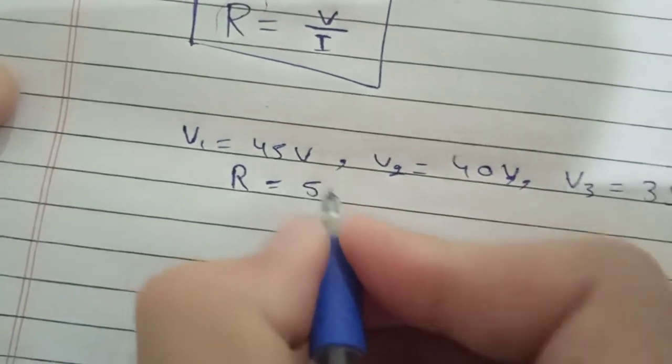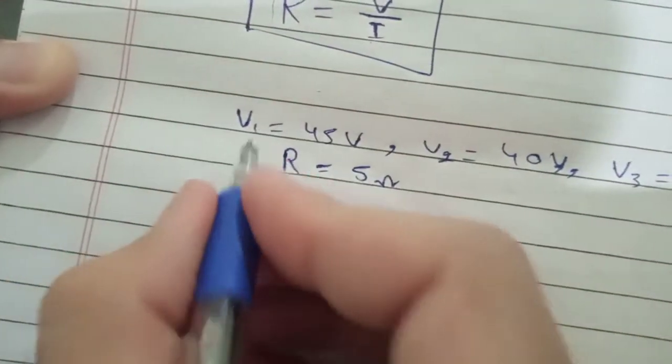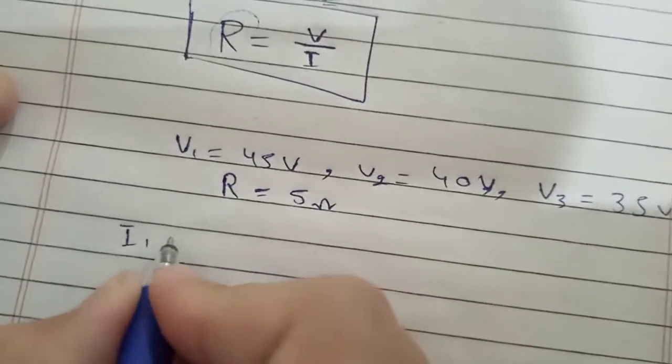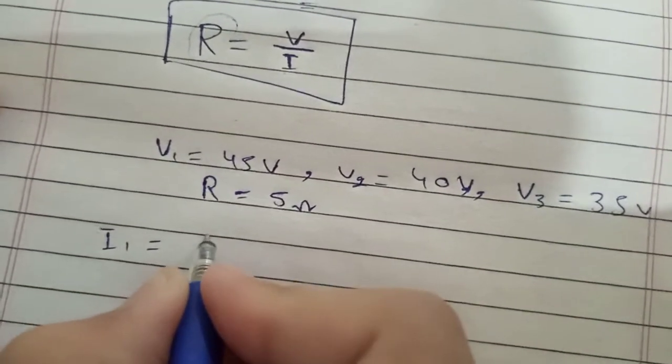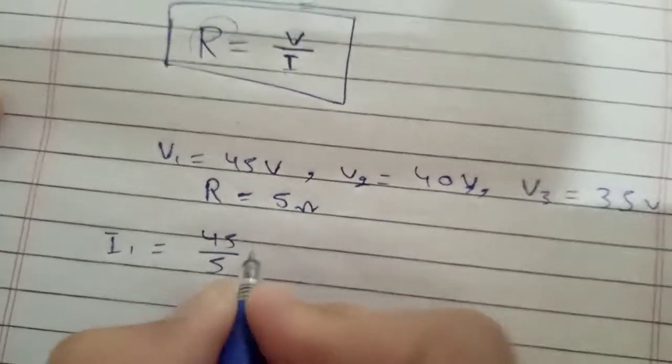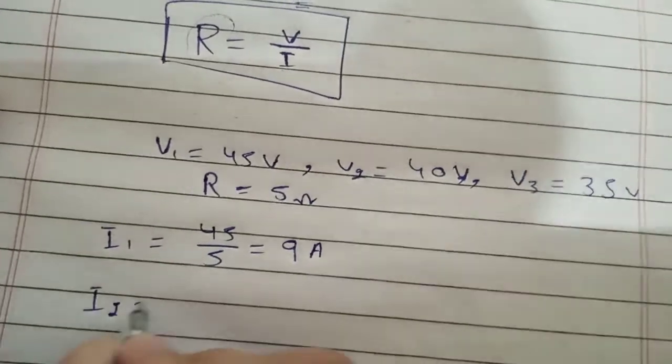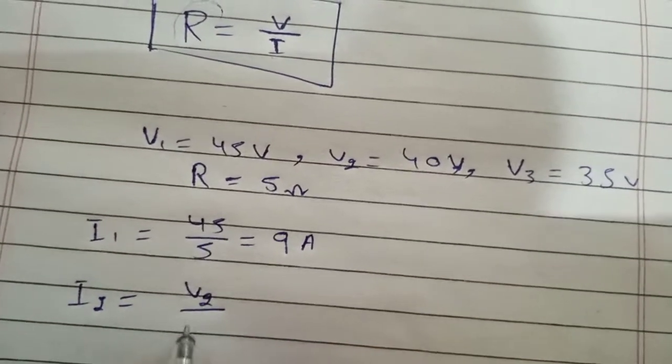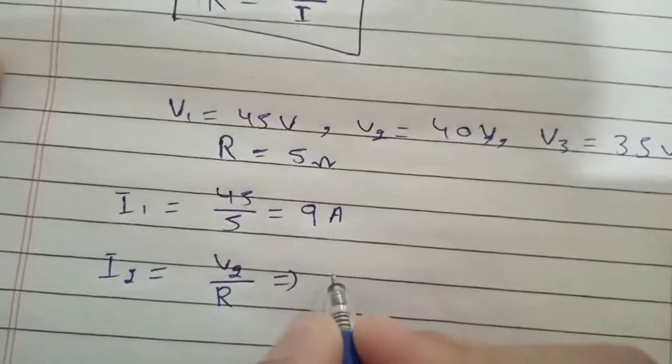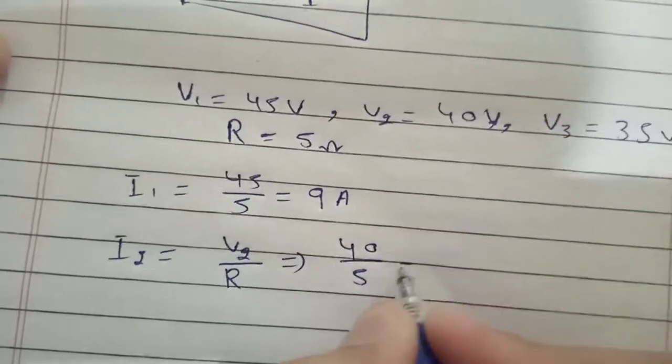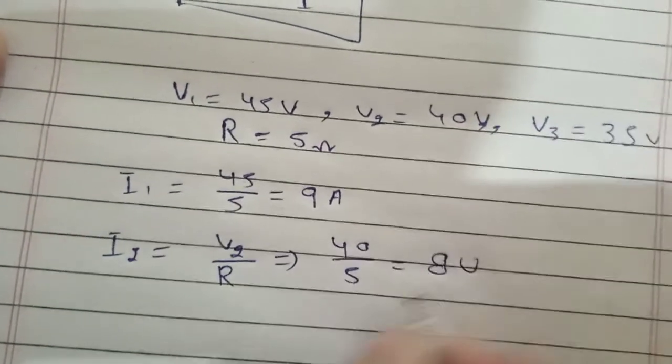Now let's calculate the current for each of the voltage supplied. I1 equals V by R, which is 45 divided by 5, this is 9A. In the second case, I2 is V2 divided by R, so this will be 40 divided by 5, which is 8 amperes.